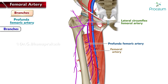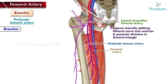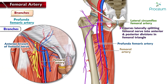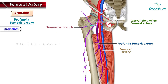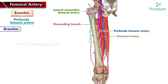The lateral circumflex femoral artery arises from the lateral side of the profunda femoris artery and courses laterally, splitting the femoral nerve into anterior and posterior divisions in the femoral triangle. Its ascending branch joins the trochanteric anastomosis, providing blood supply to the greater trochanter of the femur. The transverse branch joins the cruciate anastomosis, and the descending branch anastomoses with the superior lateral genicular branch of the popliteal artery, contributing to blood supply of the knee.